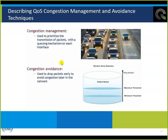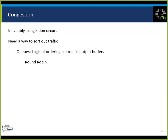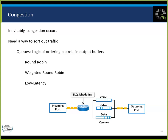Congestion management and congestion avoidance — the two main techniques. Congestion management involves queuing: the logical ordering or reordering of packets and frames. Round robin is one method. We can have round robin, weighted round robin, or low latency queuing (LLQ). Round robin means: send one to A, one to B, one to C, and repeat.